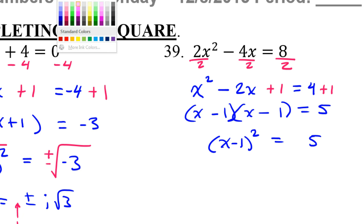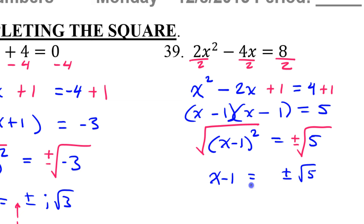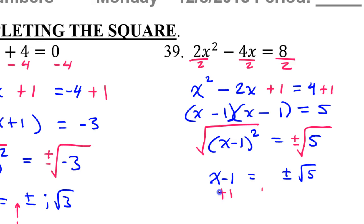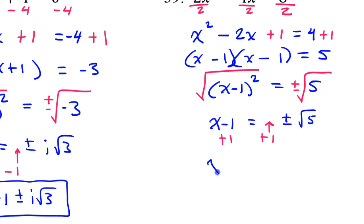To unsquare this, I can take the square root of both sides. Don't forget your plus or minus. That's going to give me x minus 1 is equal to plus or minus radical 5. To get x by itself, I will now add 1 to both sides and put it right in the front. So that's going to give me x equals 1 plus or minus radical 5, and that's as far as I can go with this problem.